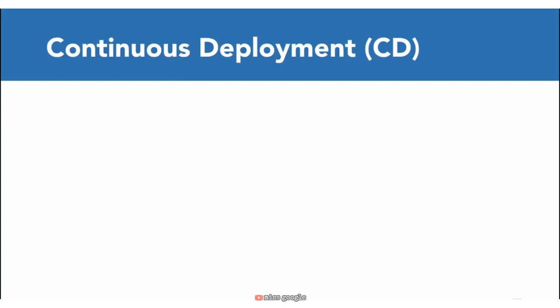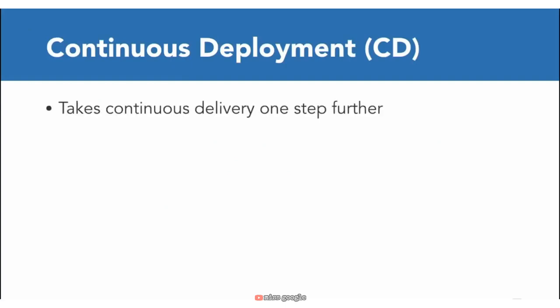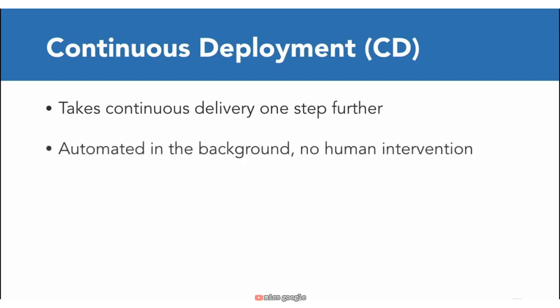Continuous deployment, also referred to as CD, takes continuous delivery one step further. This is the actual delivery of these changes and updates to production. Just like other tests, there is no human interaction and all passing tests will send a new change to be deployed into production. With CD, it improves the feedback loop from customers and eliminates the need for a release day. One frustrating thing for developers is working on a new feature or bug fix and not seeing it go into production for days, weeks, or maybe even months later. Now you can focus on building software and see your work go live minutes or even seconds after you're done working on it.